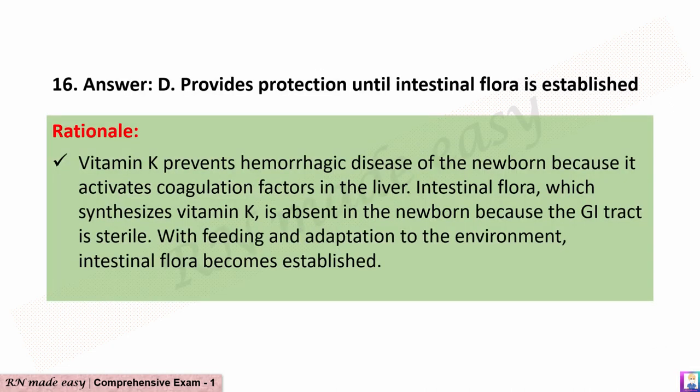The correct answer is D: Provides protection until intestinal flora is established. Rationale: Vitamin K prevents hemorrhagic disease of the newborn because it activates coagulation factors in the liver. Intestinal flora, which synthesizes vitamin K, is absent in the newborn because the GI tract is sterile. With feeding and adaptation to the environment, intestinal flora becomes established.